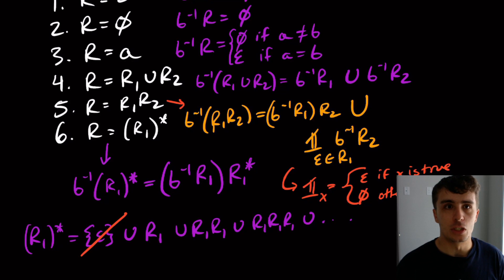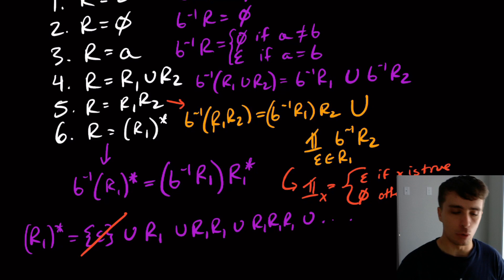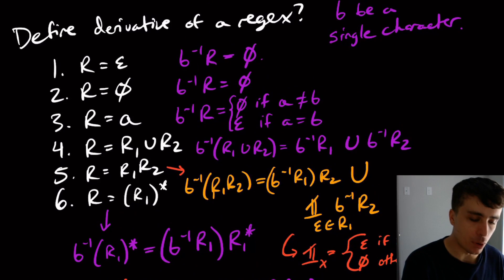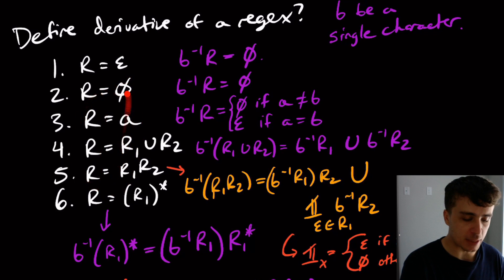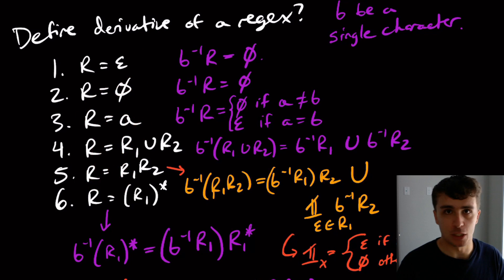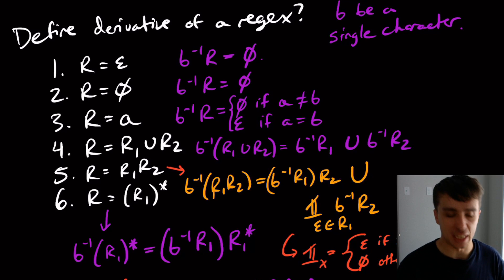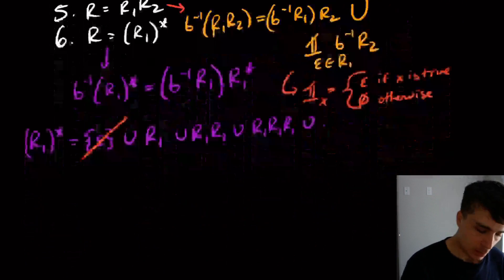Hi, and welcome to another edition of Easy Theory. Right now we're going to do an application, an example, of using a Brzozowski derivative. Last time we talked about these derivative things with respect to regexes, and I'll get you through an example — actually, several examples.